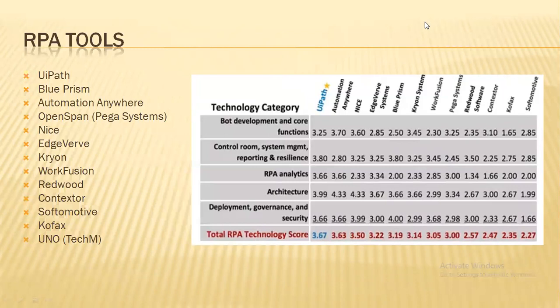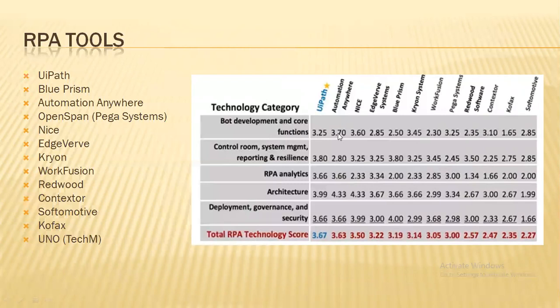When I talk about 'bot,' 'robot,' or 'resource' — that is a machine, a software bot or software robot. Don't get confused. As part of our class agenda I'll talk about all bots, how they perform, how they work, how they act like humans. Technology-wise, UiPath gets a rating of 3.25 for bot development and core functions. Automation Anywhere gets 3.70 and Blue Prism gets 2.50. Bot deployment is a little slower in Blue Prism but in Automation Anywhere, at 3.25 rating, it's very fast to deploy bots onto your process.